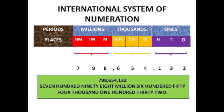We also place commas according to periods in the international system. For the number 798,654,132: starting from the ones place — 1, 3, 2 (ones period complete), place a comma; then 4, 5, 6 (thousands period complete), place a comma; then 7, 9, 8 — no comma at the start. So the number is written as 798,654,132 and read as 'seven hundred ninety-eight million, six hundred fifty-four thousand, one hundred thirty-two.' I hope the difference between the Indian and international systems is now clear.